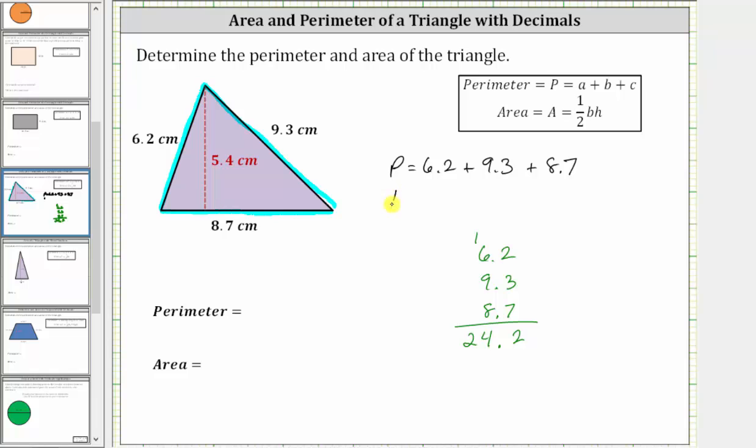We now know the perimeter is equal to 24.2 centimeters. Remember, the perimeter is a length or distance, and because the sides are in centimeters, the perimeter is also in centimeters.